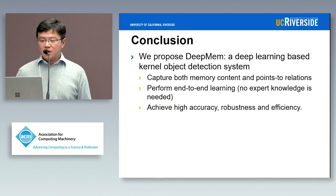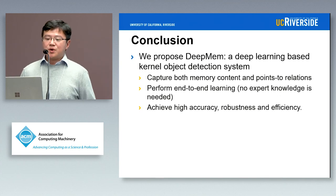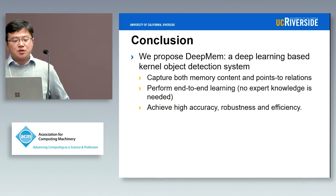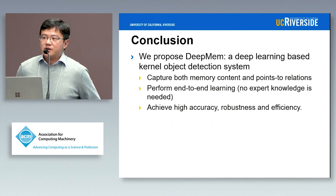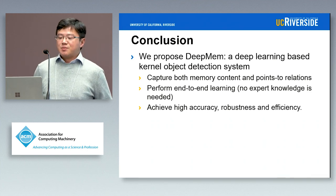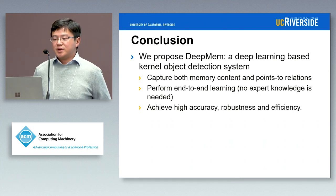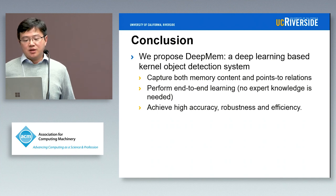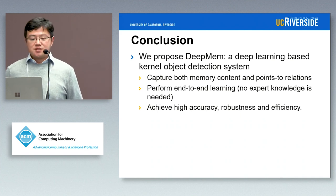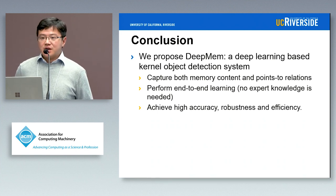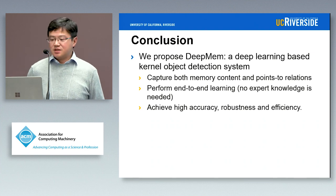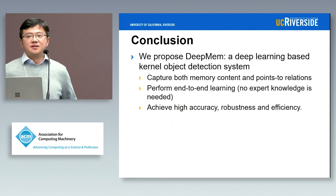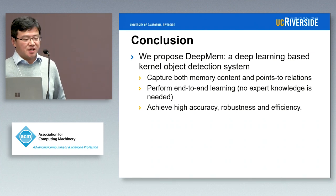In conclusion, we propose DeepMem, a deep learning-based kernel object detection system. It captures both memory content and points-to relations and performs end-to-end learning with no expert knowledge needed. We achieve high accuracy, high robustness, and high efficiency. Thank you.